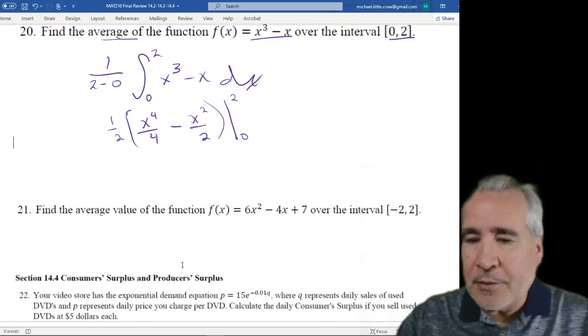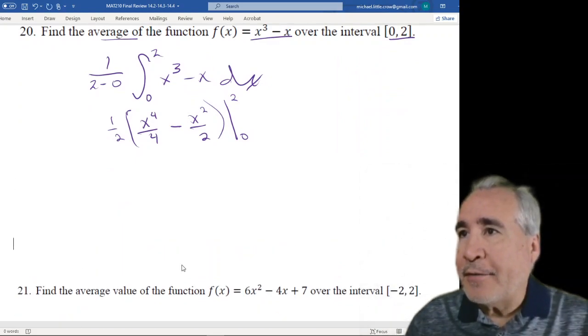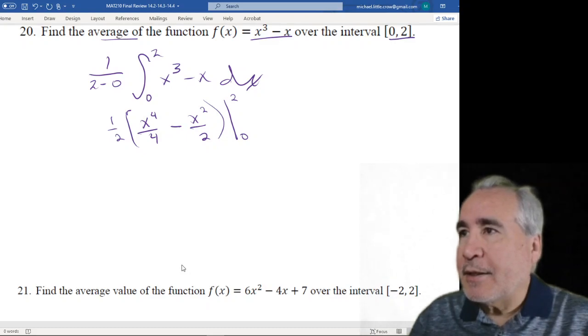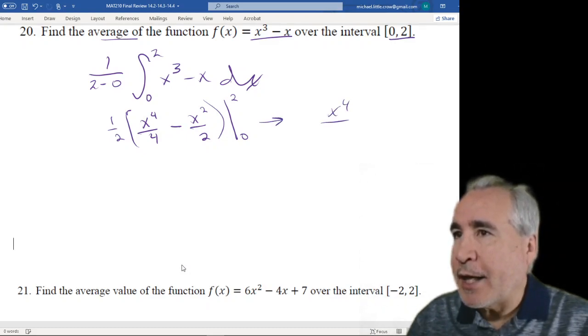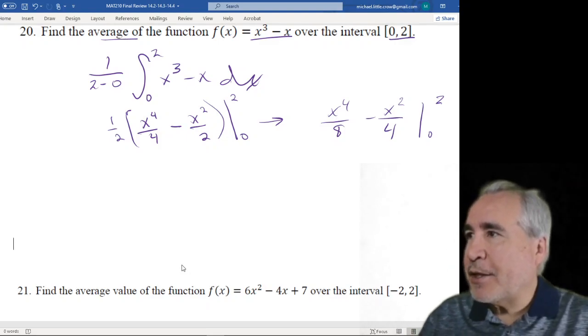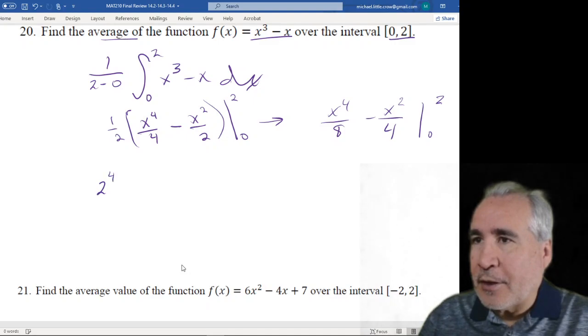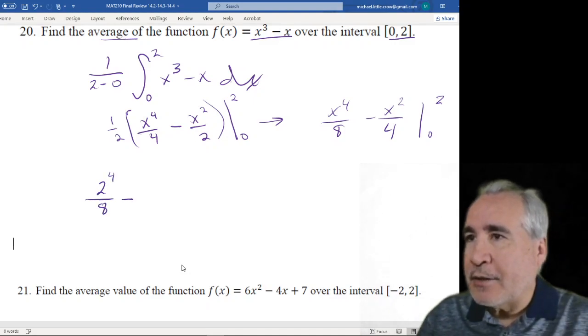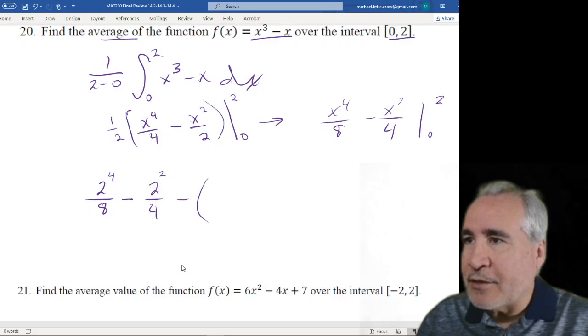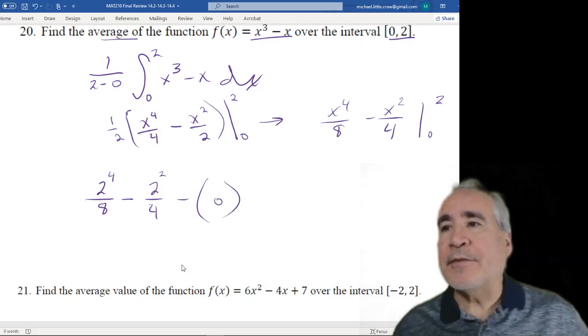If you wanted to, you could distribute through the 1 half. Let's go ahead and do that. So we get x to the 4th over 8, 2 times 4 is 8. And then minus x squared over 4, 2 times 2 is 4. Going from 0 to 2, the nice part is when you plug in 0 for these x's, they're gone. So we don't have to worry about the back part. Plug in the front part. You get 2 to the 4th over 8 minus 2 squared over 4 minus, and again, plug in 0, you get 0 minus 0. So this is all going to be 0. Okay. So just to let you know, we didn't forget about it.